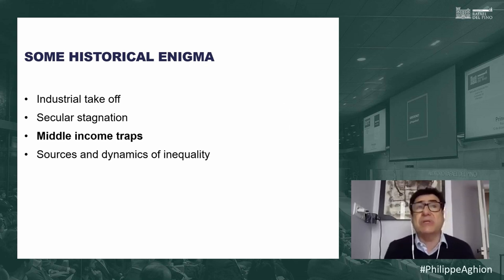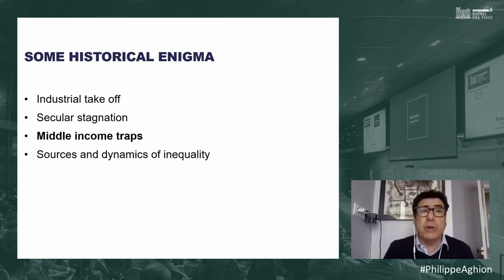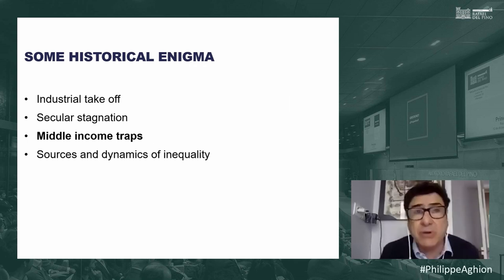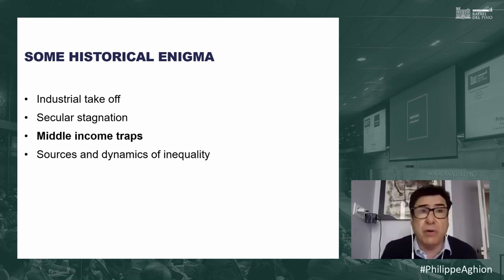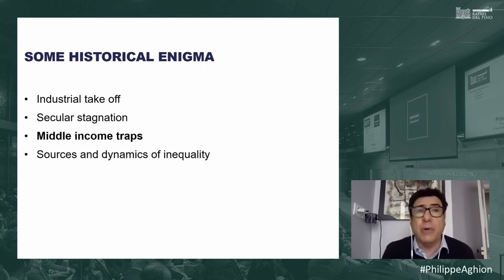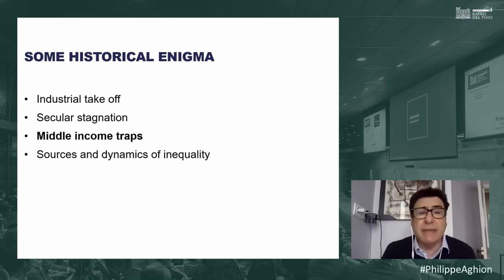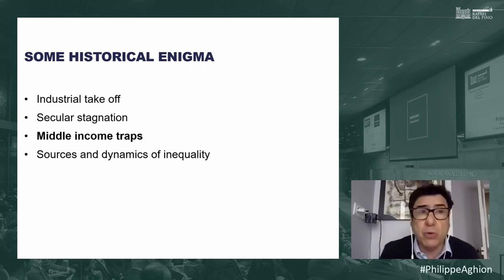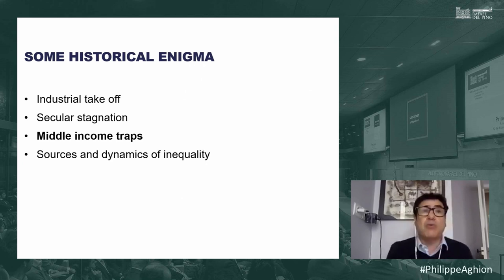The same happened in Japan with the keiretsus — they blocked new entry and lobbied the Japanese government against more competitive institutions. Interestingly, the financial crisis of the late 1990s weakened the power of conglomerates in Korea, which allowed non-conglomerate firms to enter and forced the Korean government to open up to trade and competition. The crisis had a positive effect by weakening the conglomerates and enabling more pro-competition policy.